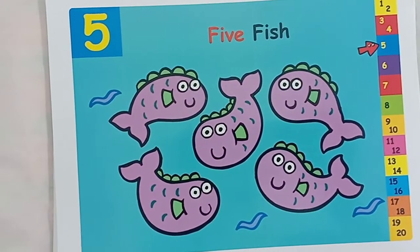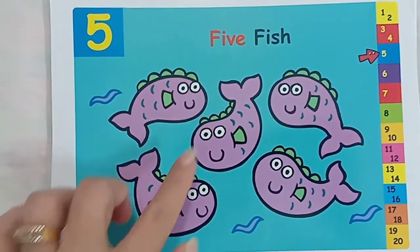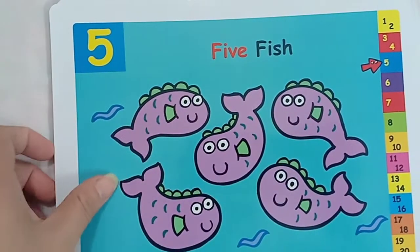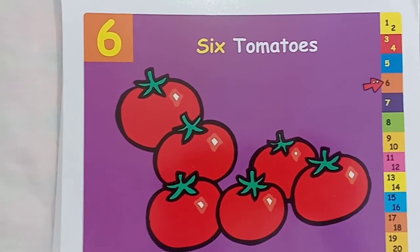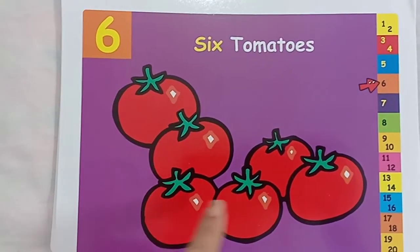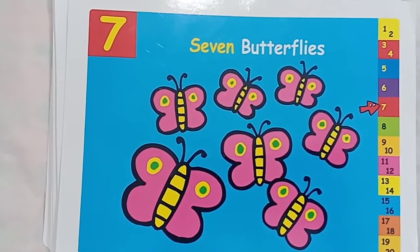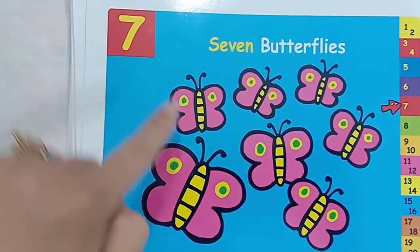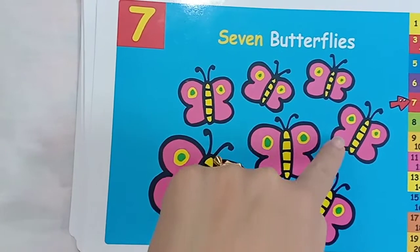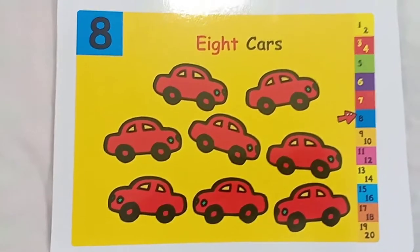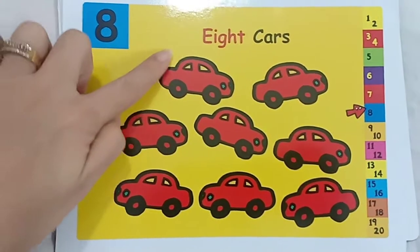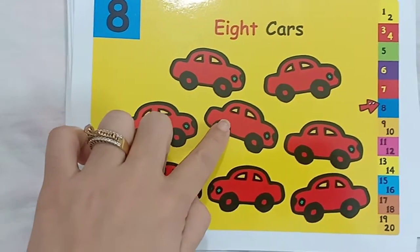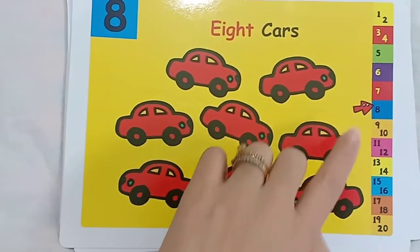How many fish? 1, 2, 3, 4, 5 — 5 fishes. How many tomatoes? 6 tomatoes: 1, 2, 3, 4, 5, 6. How many butterflies? 7: 1, 2, 3, 4, 5, 6, 7. How many cars? 8: 1, 2, 3, 4, 5, 6, 7, 8 — 8 cars.